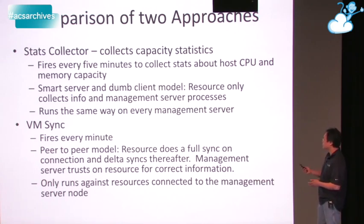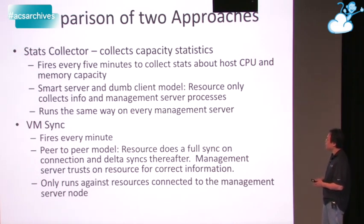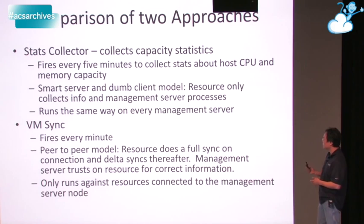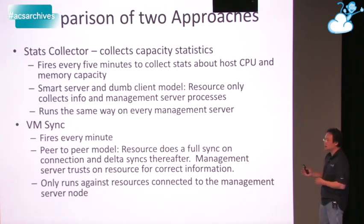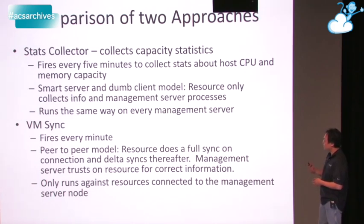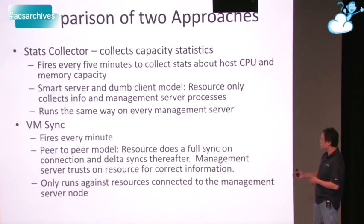VM Sync was also written in version 1.0 and fires every minute. It follows a peer-to-peer model where the resource is trusted to do the right thing when it returns information. There is a full sync on connecting to the resource — all information about VMs on that host is returned to the management server and compared. From there it does delta sync, meaning only out-of-band changes get transferred back. VM Sync is only run against resources connected to a specific management server node, so resources connected to management server 2 never trigger a VM Sync against management server 1.